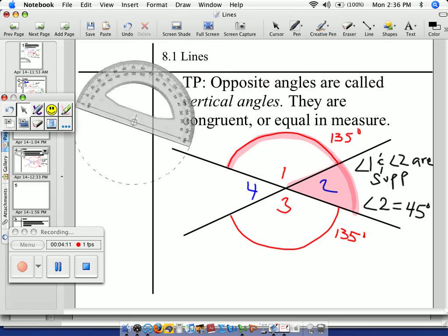Now, I kind of led you guys with a big hint. I told you 1 and 2 are supplementary. Supplementary means adding to 180 degrees. I wrote that here on the side. So if 1 is 135, the missing angle is 180 minus 135. And when you do that subtraction, you get 45 degrees.